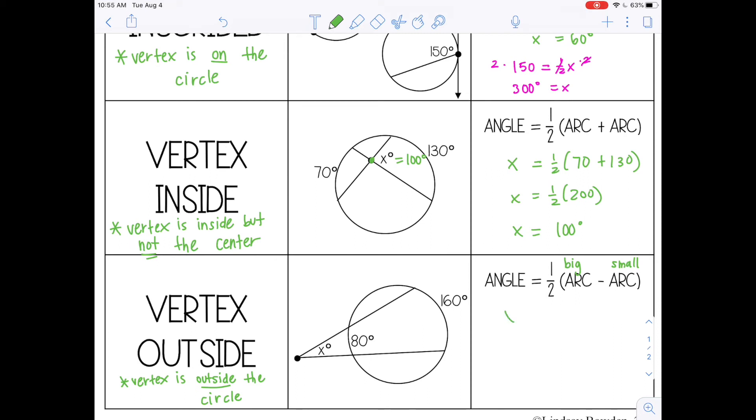So my angle here is x. The bigger arc is 160, and the smaller arc is 80. So I'm going to subtract those, that would be 80. And then half of 80 is 40 degrees. So this angle here is 40 degrees.